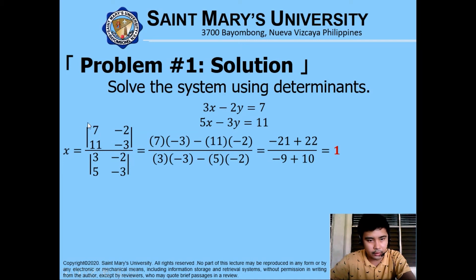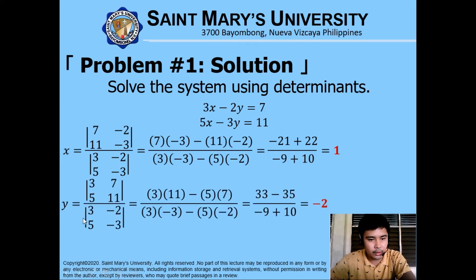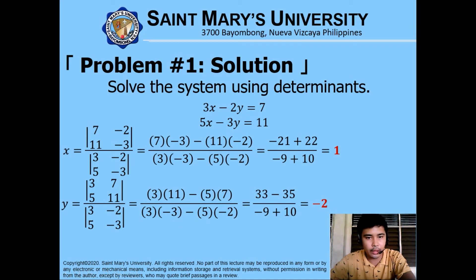The denominator is 3 times negative 3 minus 5 times negative 2, and simplifying gives x equals 1. Similarly, to find y, replace the coefficients of y with the constants 7 and 11. Compute 3 times 11 minus 5 times 7, using the same denominator as for x, which leads to y equals negative 2. The solution to the system is x equals 1 and y equals negative 2.